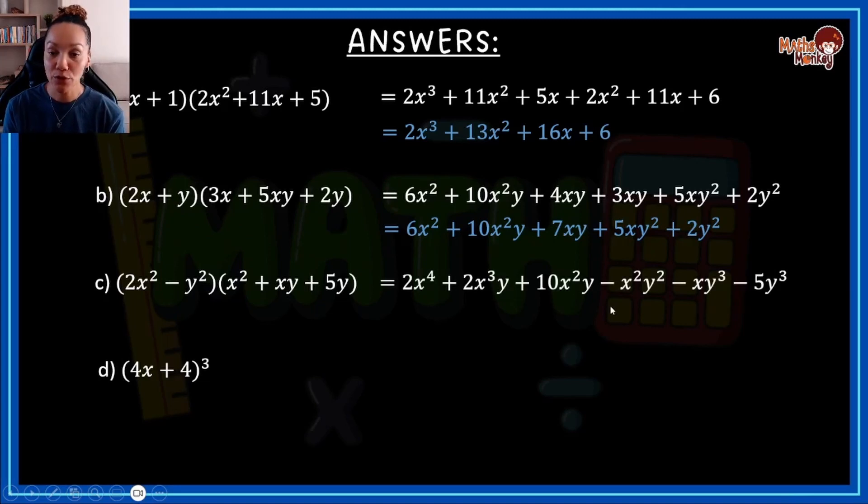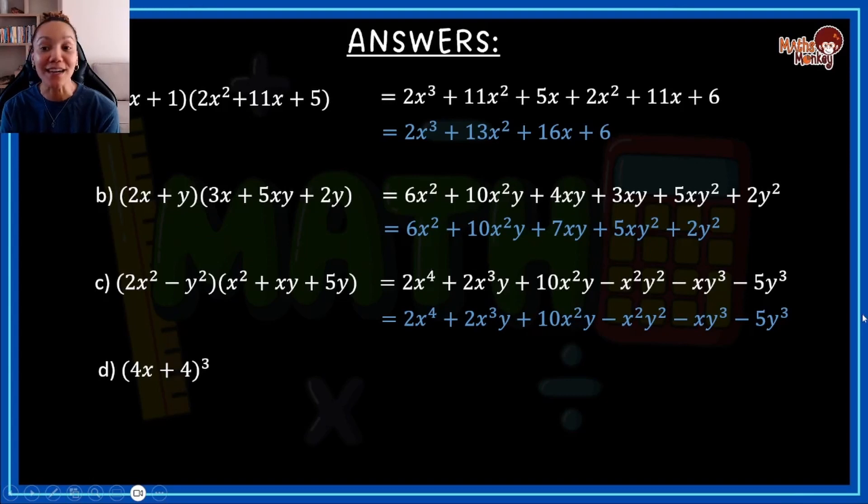Then by C, same story. Here, there was nothing that you could add in subtract because there were no like terms here. So yes, we had x's and we had y's, but the variables and the powers were all different.